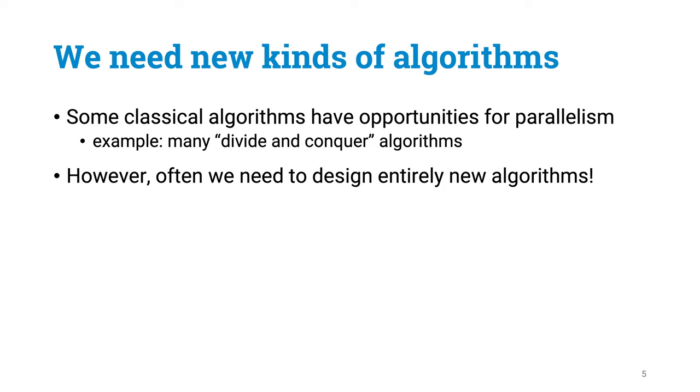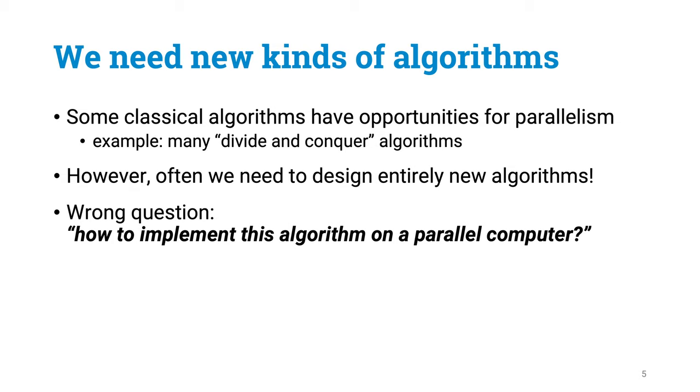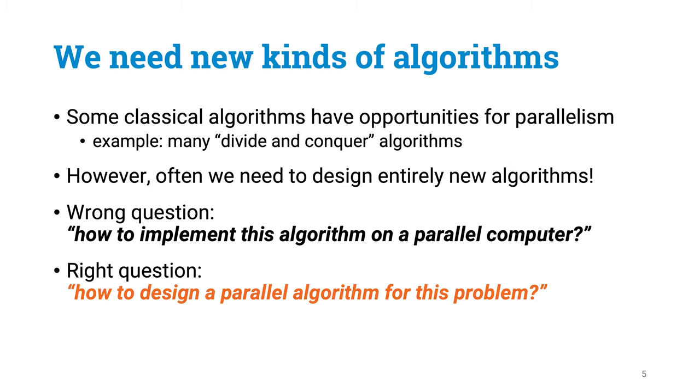And it is important to keep in mind that the same computational problem can be solved with many different algorithms. Some algorithms are inherently sequential. So if you pick some sequential algorithm and ask how to develop a parallel implementation of it, you may have a dead end. What you really need to have first is a parallel algorithm in which you have enough independent operations. And only after that you can start to think about how to implement it efficiently in practice.